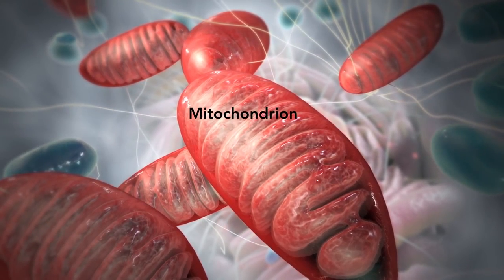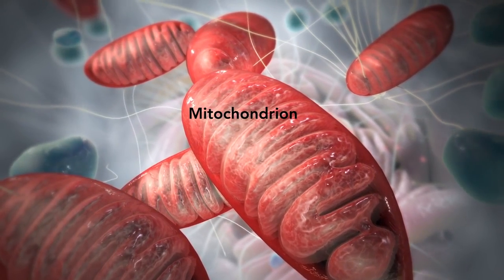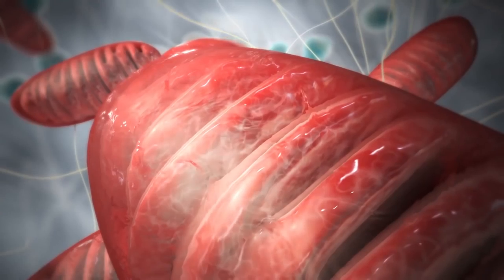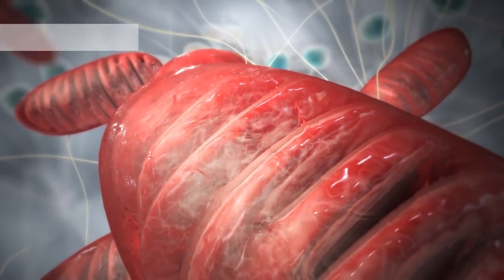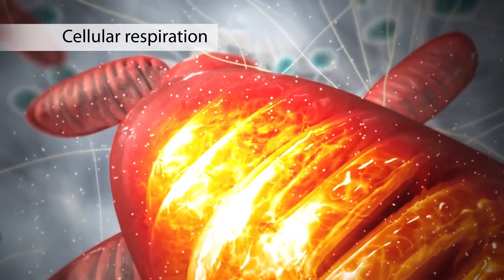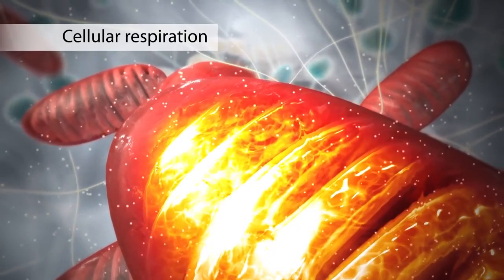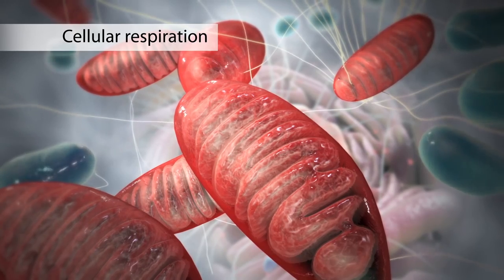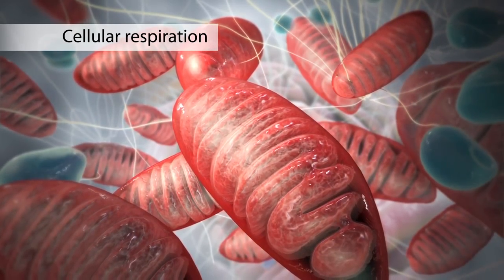The mitochondrion is an organelle that is the powerhouse for both animal and plant cells. During a process called cellular respiration, the mitochondria make ATP molecules that provide the energy for all of the cell's activities. Cells that need more energy have more mitochondria.